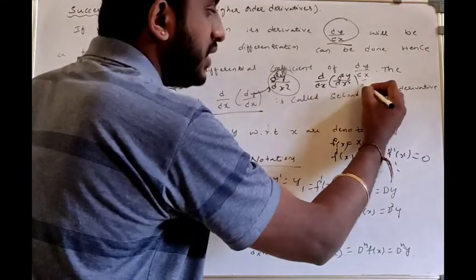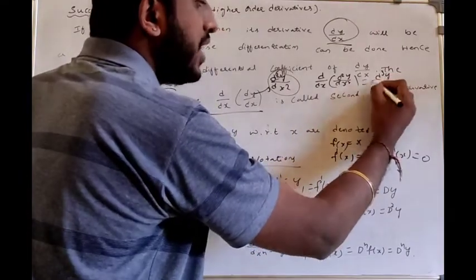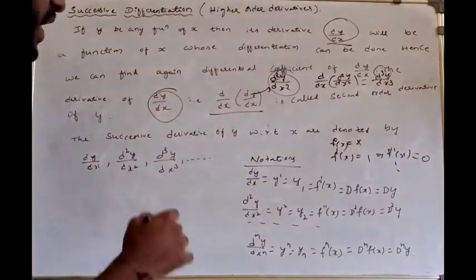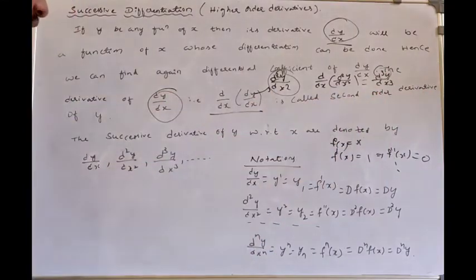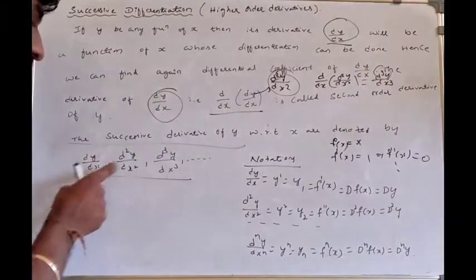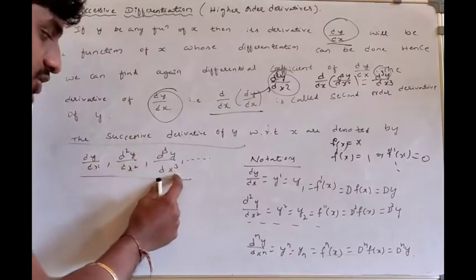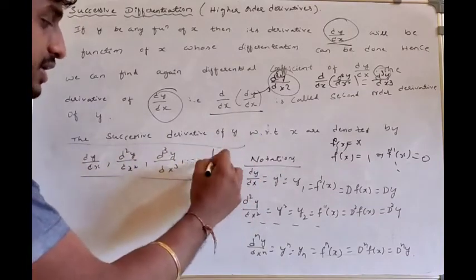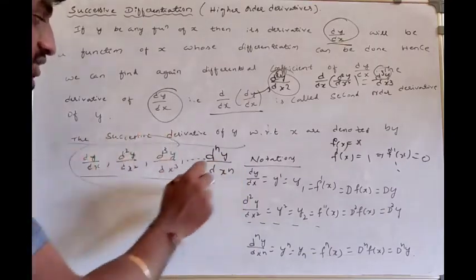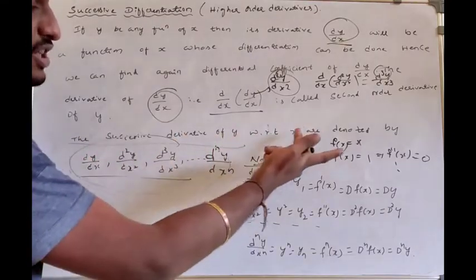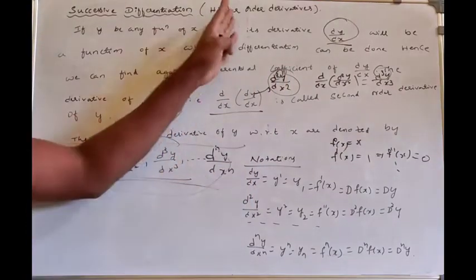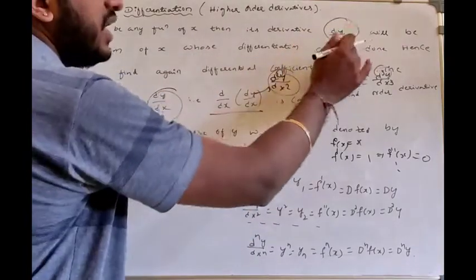Differentiating again gives the third order derivative d³y/dx³. The notation continues: dy/dx, d²y/dx², d³y/dx³, and so on. The nth order derivative is written as dⁿy/dxⁿ. These are called the successive derivatives of y with respect to x.